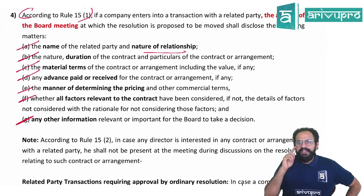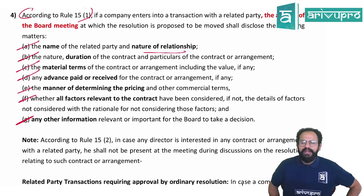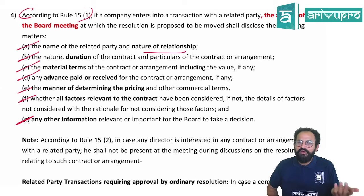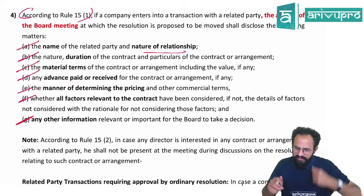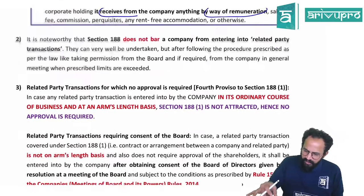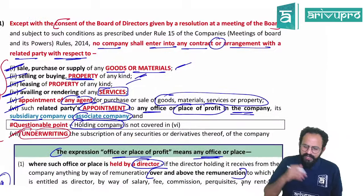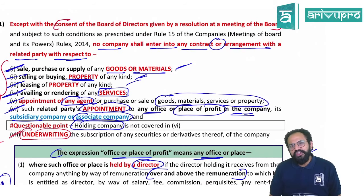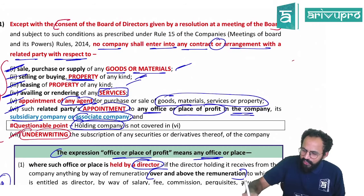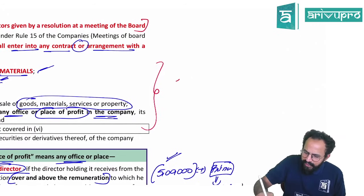If you are a related party attending the board meeting — for a public company — you must disclose it and you cannot participate in the meeting; you are not counted in the quorum. For a private company, you can disclose and still continue in the meeting. Board resolution is sufficient provided you are doing it only up to a particular limit. If you exceed the limit — just like in section 186 — you need to take shareholders' approval.